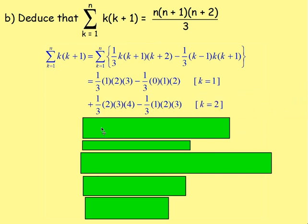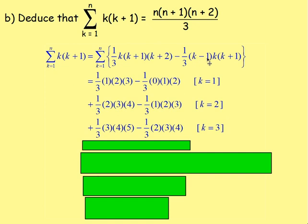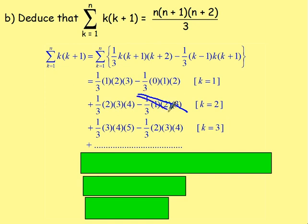When k equals 3: we have one third times 3 times 4 times 5, take away one third times 2 times 3 times 4. What are you noticing? We have one third times 1×2×3, but when we substitute the next value of k, we subtract that same term — one third times 1×2×3 — so they cancel out. Similarly, one third times 2×3×4 appears, and on the next line we subtract one third times 2×3×4, so they also cancel out.